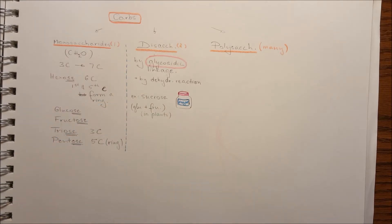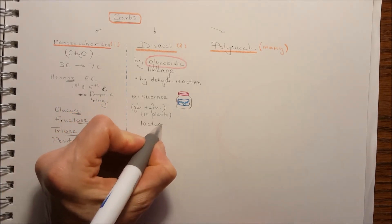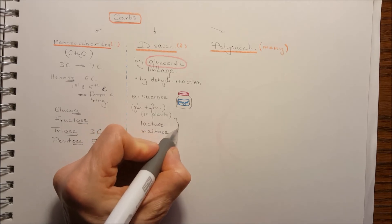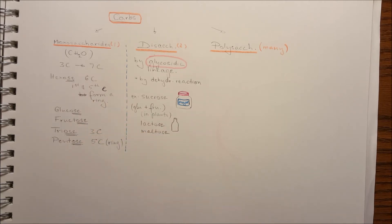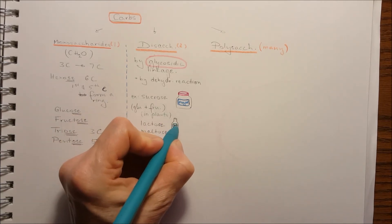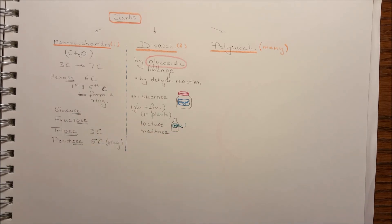The other disaccharide that you have to know is the lactose that is found in milk as well as maltose that is found in plants.